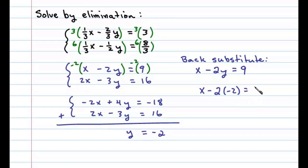Here when I substitute negative 2 for Y, we're left with X plus 4 equals 9. Subtracting 4 on both sides, X will equal 5. And so the answer presented as an ordered pair is 5 comma negative 2.